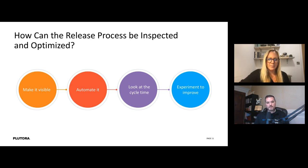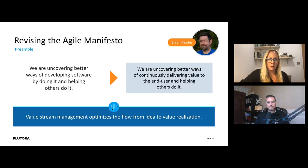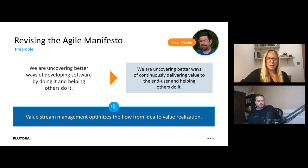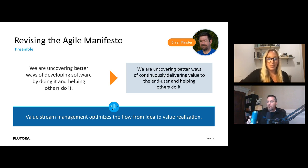We need to re-engineer to become more progressive in release management. We looked at this through the lens of Brian Finster's recent Medium article where he adjusted the Agile Manifesto — which is about 20 years old. He suggests moving from 'we are uncovering better ways of developing software' to 'we are uncovering better ways of continuously delivering value to the end user.' This is relevant to release managers as well.